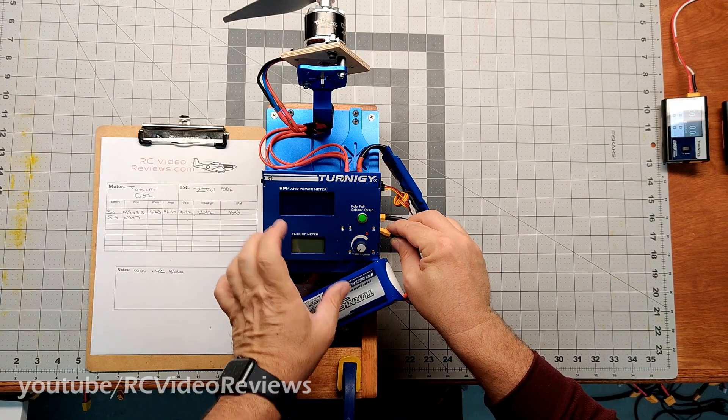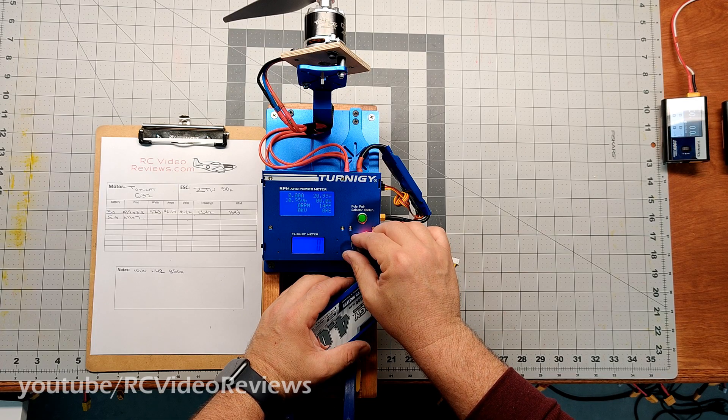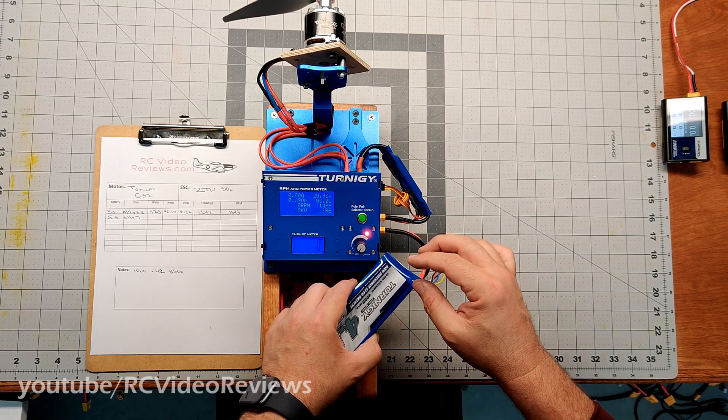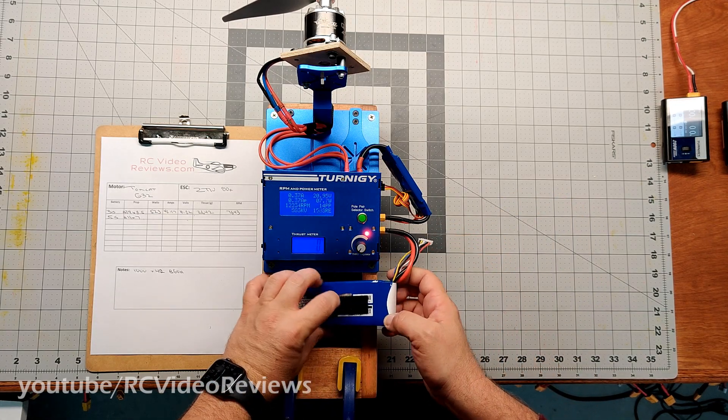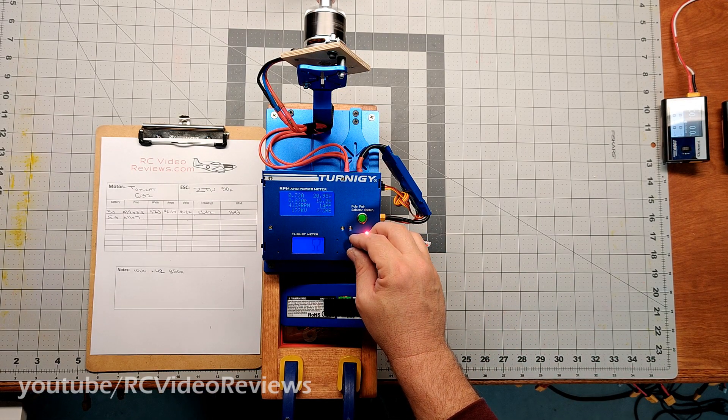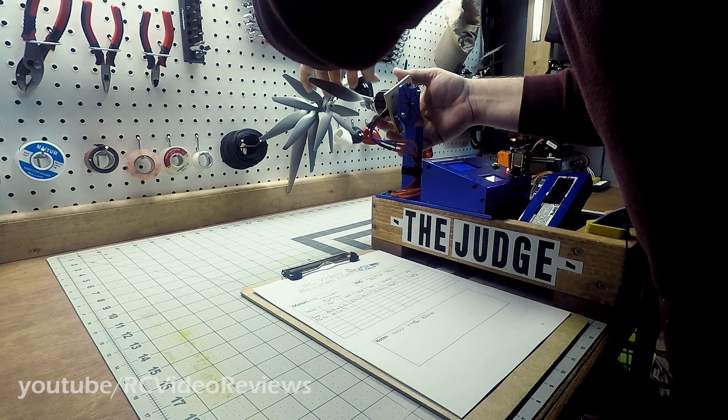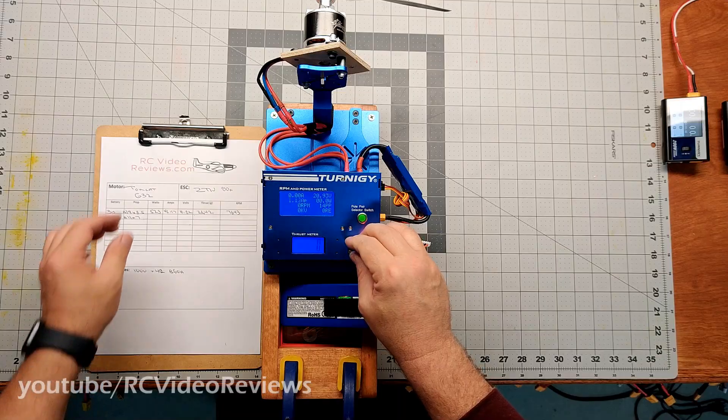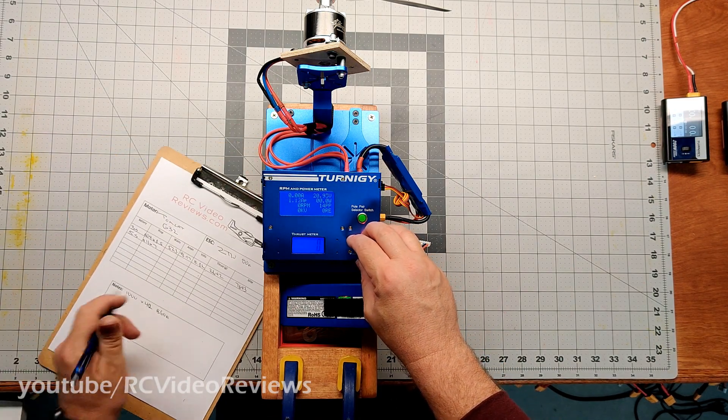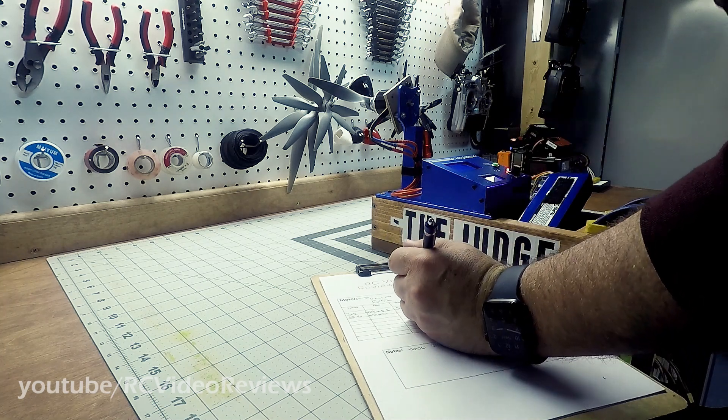Okay, I'm just going to plug in this 5-cell. I'm going to calibrate the ESC again. Back down to zero. All right, let's give a listen, make sure everything looks okay. I'm learning when I change these props to give them a good check, make sure nothing's loose. All right, let's spin this thing up and see what we get. I'm going to be looking for thrust and RPM, and I'll get the volts, amps, and watts after I slow it down.